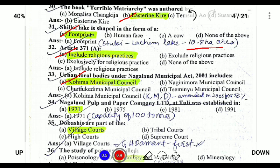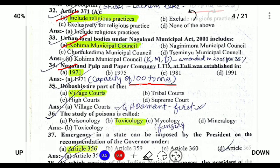Nagaland Pulp and Paper Company Limited was established in 1971 with a capacity of 100 tons; however, it was shut down due to non-functioning. The Gaonburas are part of the village court and are responsible for interpreting customary laws.